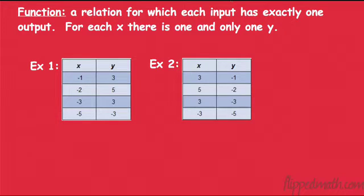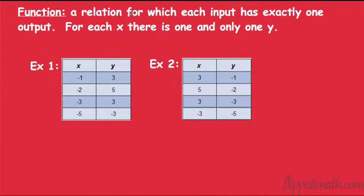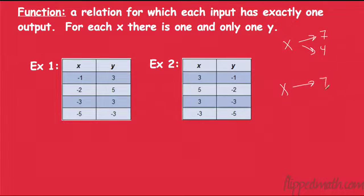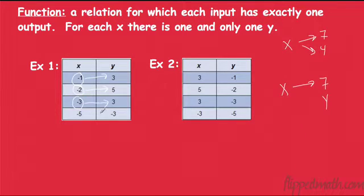That leads us to what a function is. A function is a relation — a very special relation. It's a relation where each input has only one output. Sometimes if I put an x in, I could get outputs of 7 and 4. But what a function says is: if I put an x in, I only get one output, not two. For every x I put in, I'm only going to get one y out. For x equals negative 1, it only goes to the value of 3. For x equals negative 2, it only goes to the value of 5. It doesn't matter if the y's are repeated — all that matters is that each x only goes to one y.